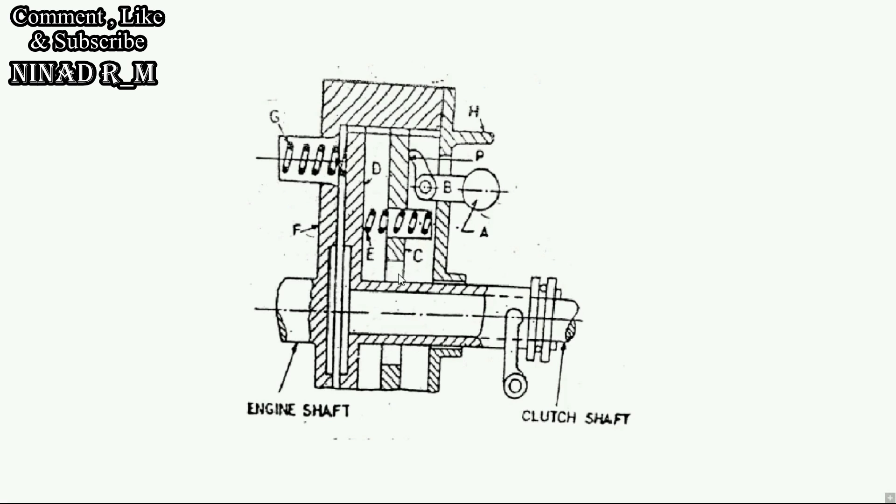So first is construction. Here is our engine shaft. This is bolt liable. Before of this, this is cut section, half section. So another half is down side of this clutch or we can say this diagram. So in construction, it has an engine shaft. This is flywheel.